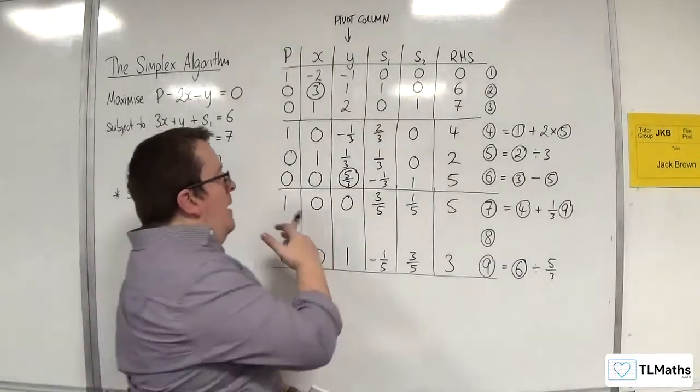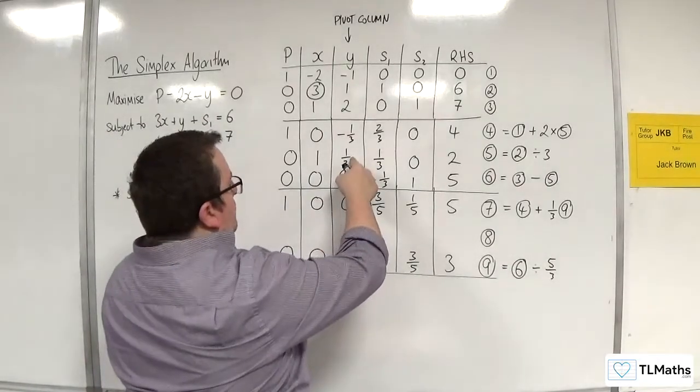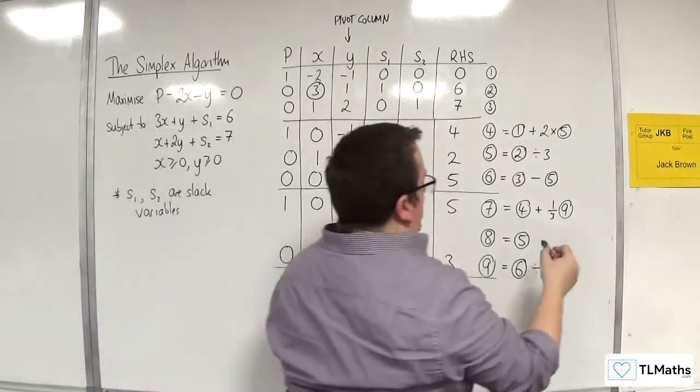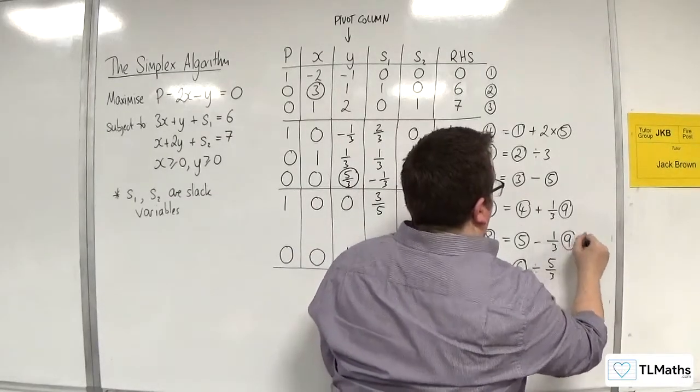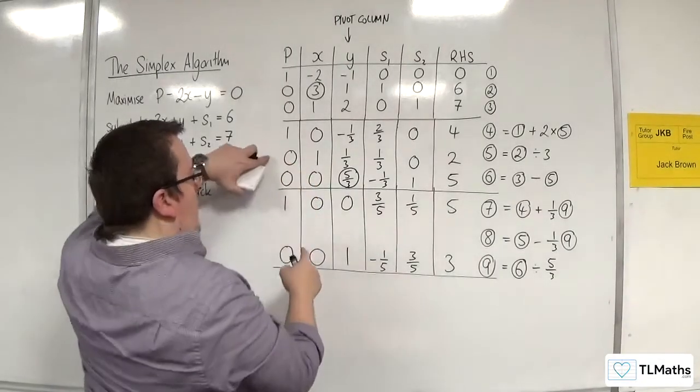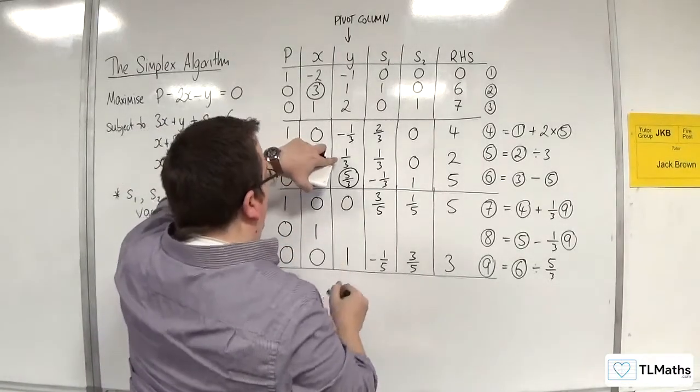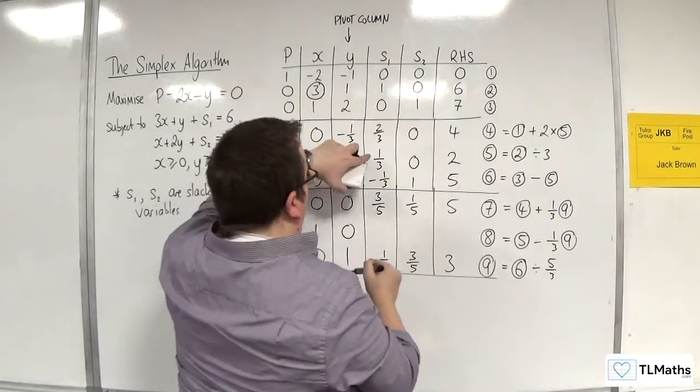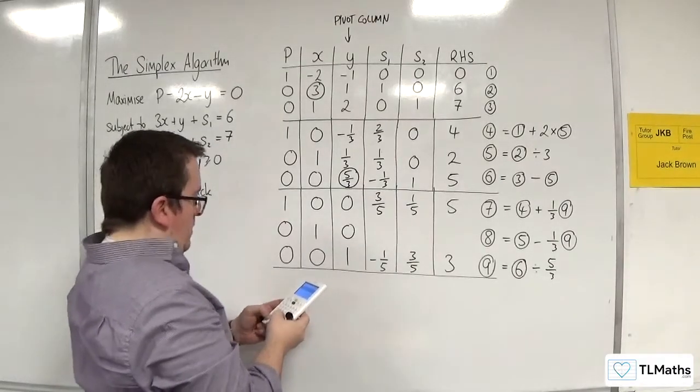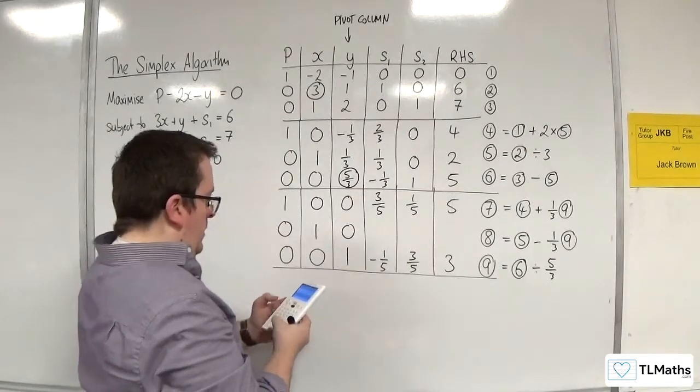Then for equation 8, which is the new equation 5, and I want to make that 0. So I'm going to get equation 5 and then take away a third of equation 9, of my pivot row. So 0 take away a third of 0 is 0. 1 take away a third of 0 is 1. 1 third take away a third of 1 is 0. 1 third take away 1 third of minus 1 fifth is 2 fifths.